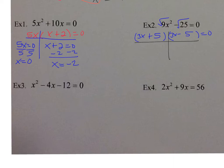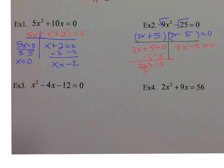Do your t-chart and set each one equal to 0. Minus 5: 3x equals negative 5, divide by 3, x is equal to negative 5 thirds. Add 5: 3x equals 5, divide by 3, x is equal to 5 thirds.